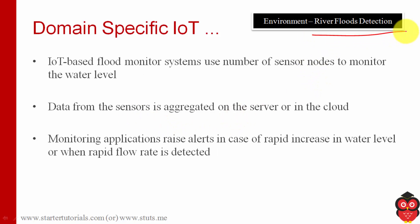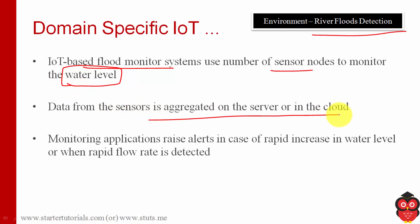The last application in smart environment is river flood detection. IoT flood monitoring systems use different sensors to monitor water levels. Data from these sensors is aggregated, stored, and analyzed in the cloud. If there is any rapid increase in water level, appropriate alerts are generated and sent to the government or flood mitigation personnel. These are the different applications in the smart environment domain, and more domains will be covered in the next session.